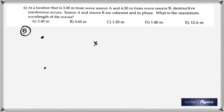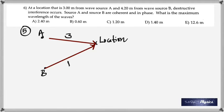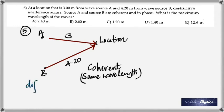Again, this is repeated. This was just like question 1, and this time there is a diagram. So there is 3 meters from one source A, 4.2 from the other. So from A it's 3, from B it's 4.2. And this time it's talking about destructive interference. Coherence means same wavelength like I told you before.